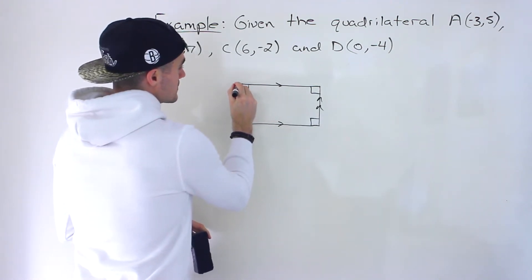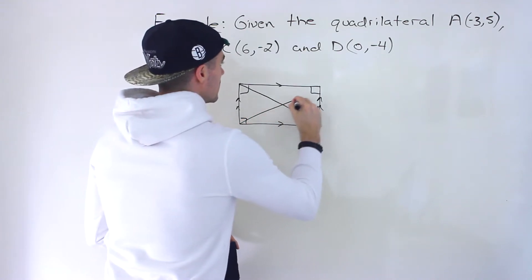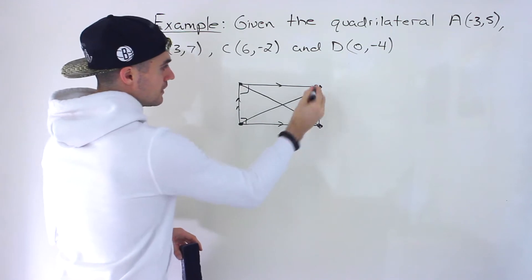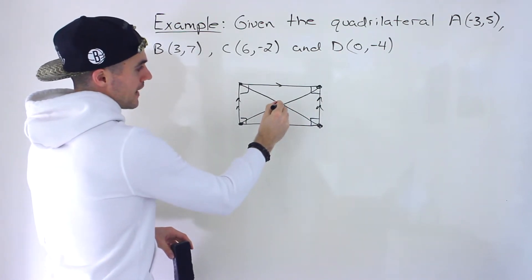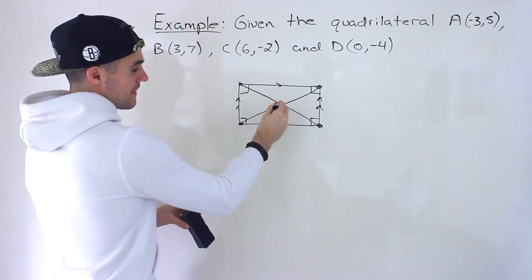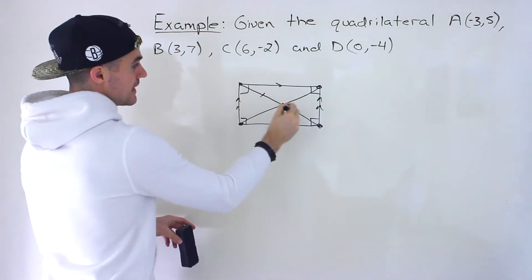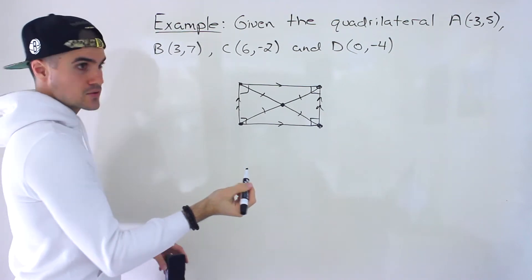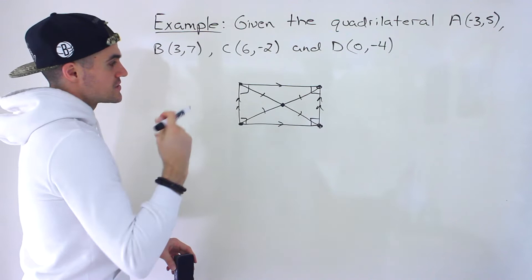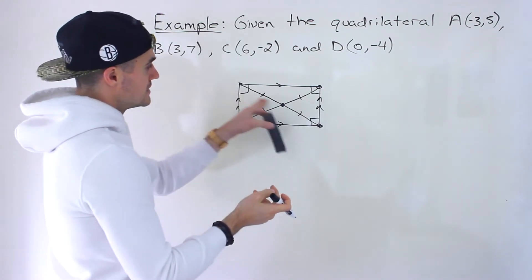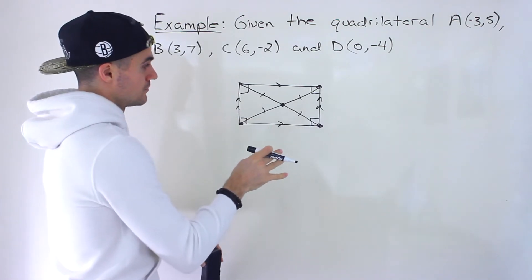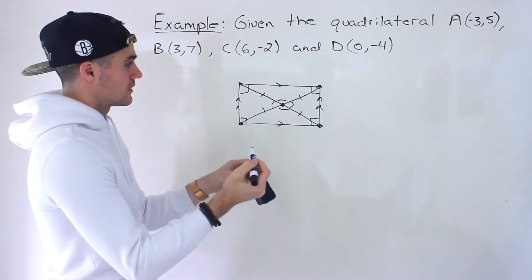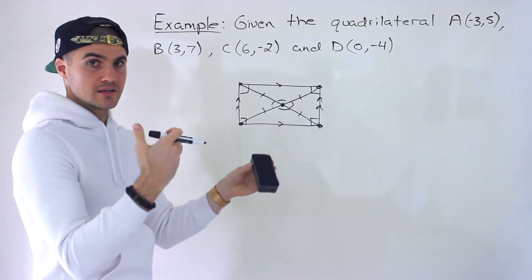In Part B, we draw the diagonals and first confirm they are equal in length — the distance from here to here equals the distance from here to here. Then we confirm that where the diagonals intersect, that point cuts both diagonals in half, so each half of one diagonal equals the other. In Part C, we verify that the diagonals are not perpendicular — that the angles between them are not 90 degrees — by finding their slopes and showing they're not negative reciprocals.